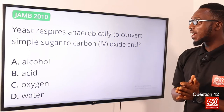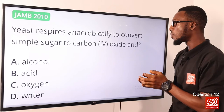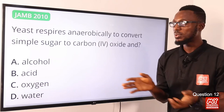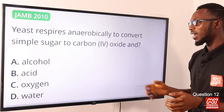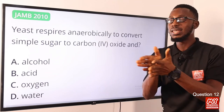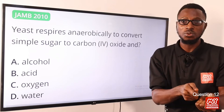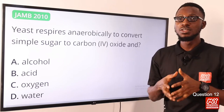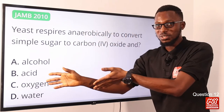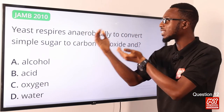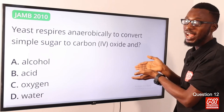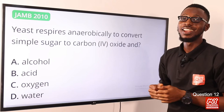Question 12: Yeast respires anaerobically to convert simple sugars to carbon dioxide and what? Yeast contains two enzymes: maltase, which converts maltose to glucose, and zymase, which decomposes the glucose to ethanol and carbon dioxide — this is the fermentation process used in industrial preparation of alcohol. So the correct option is option A, ethanol.